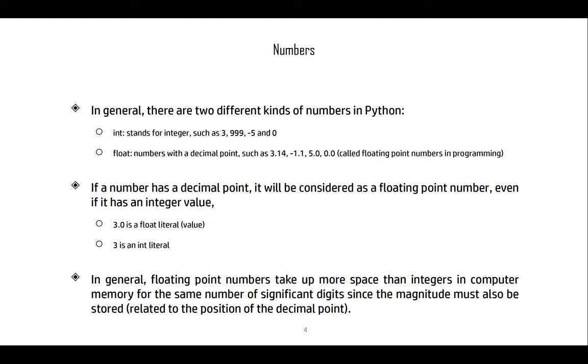In Python, there are two different kinds of numbers. We have int numbers (integers)—whole numbers like 3, 999, -5, or 0. Float are floating point or decimal point numbers like 3.14, -1.1, 5.0, or 0.0.